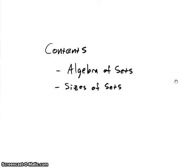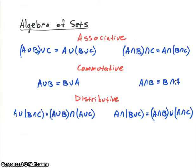In this video, we'll be looking at two topics: algebra of sets and sizes of sets. For the algebra of sets, there are three main properties: associative, commutative, and distributive.